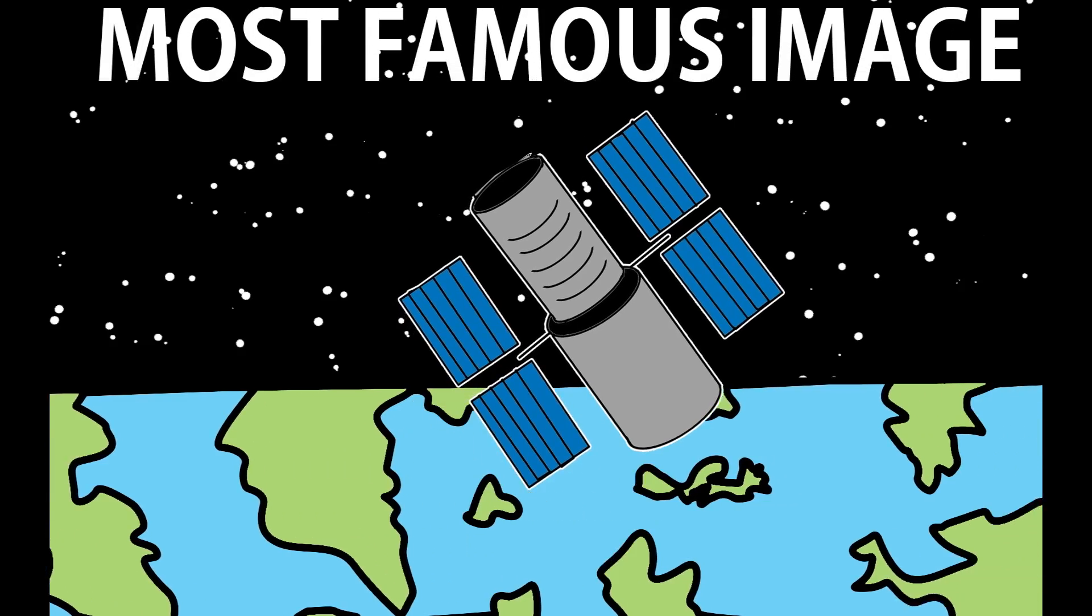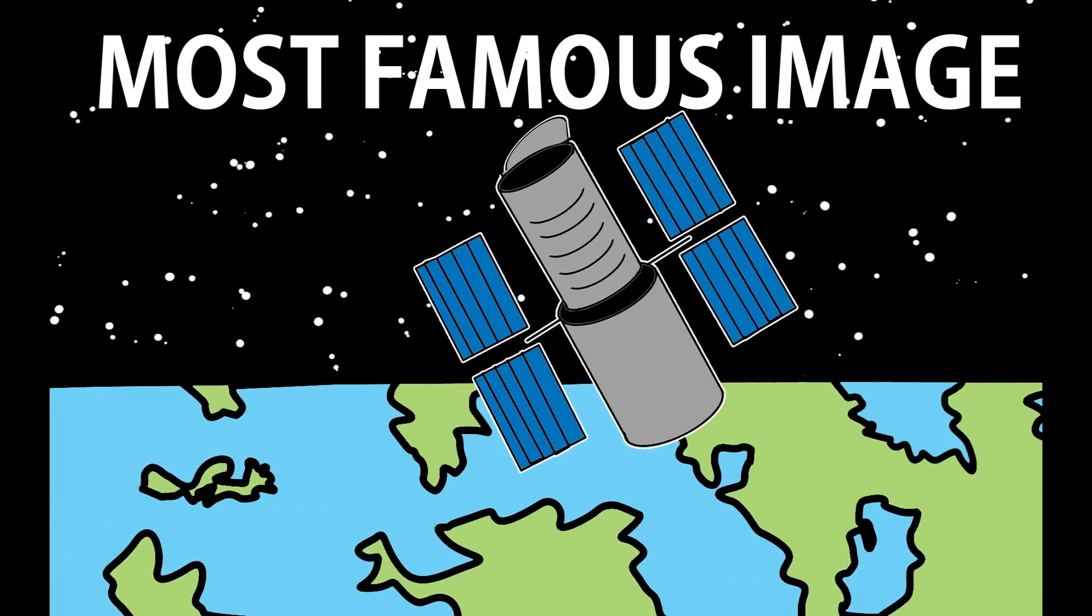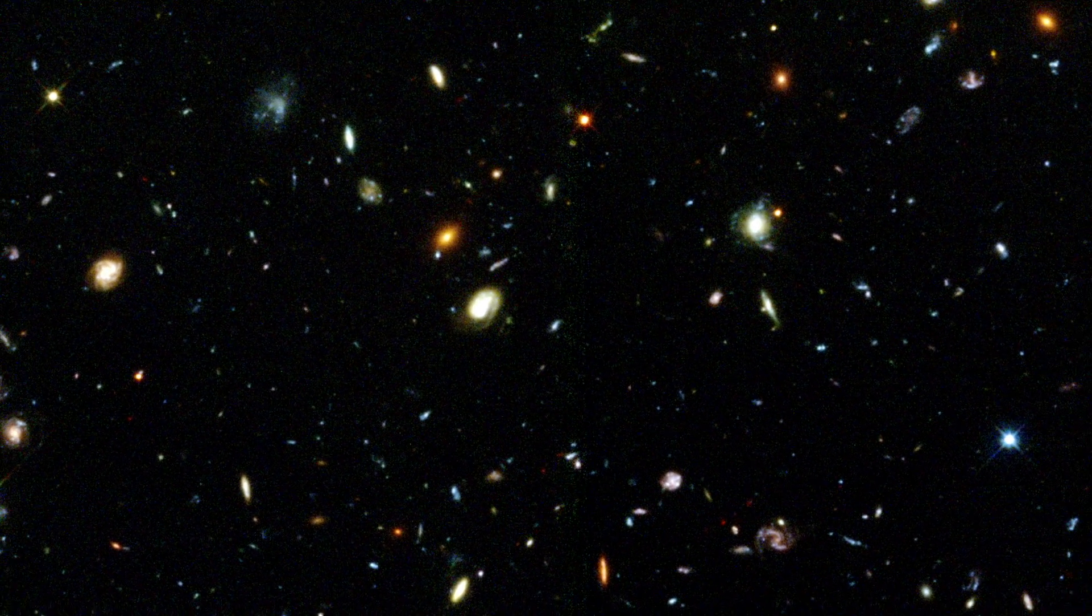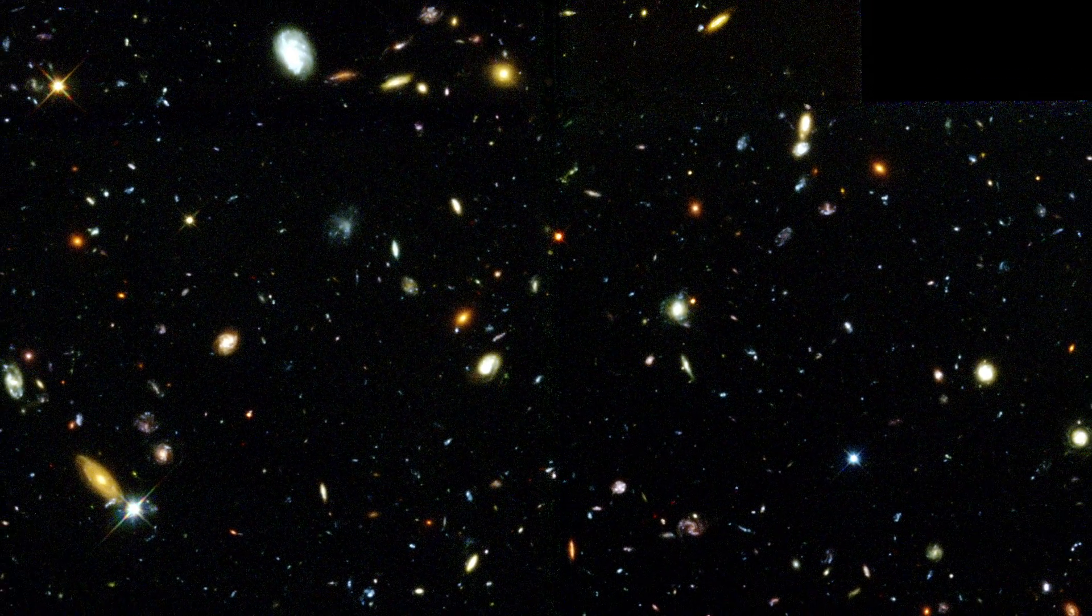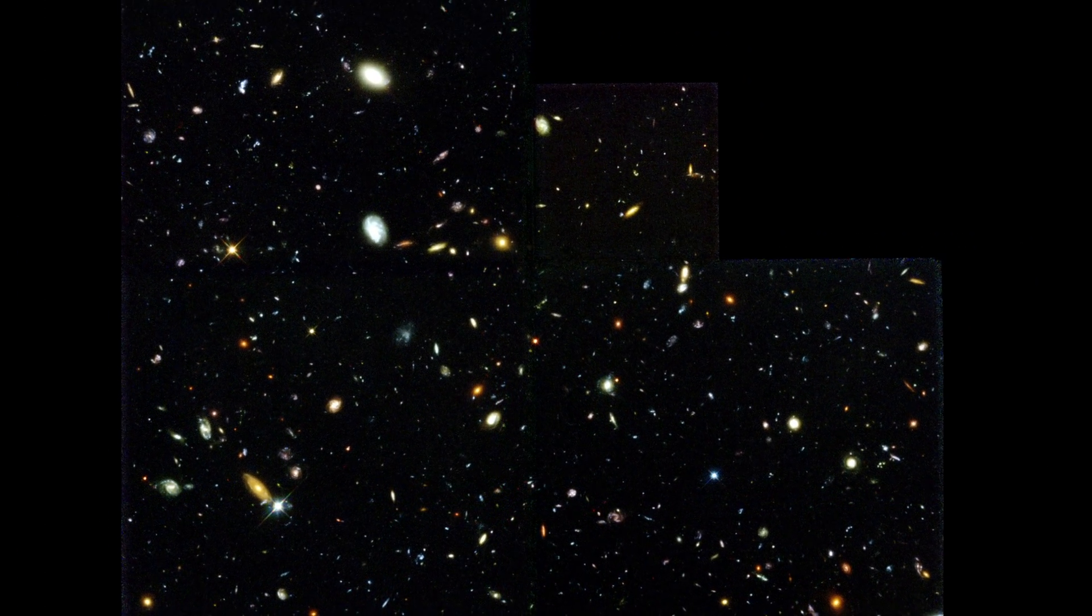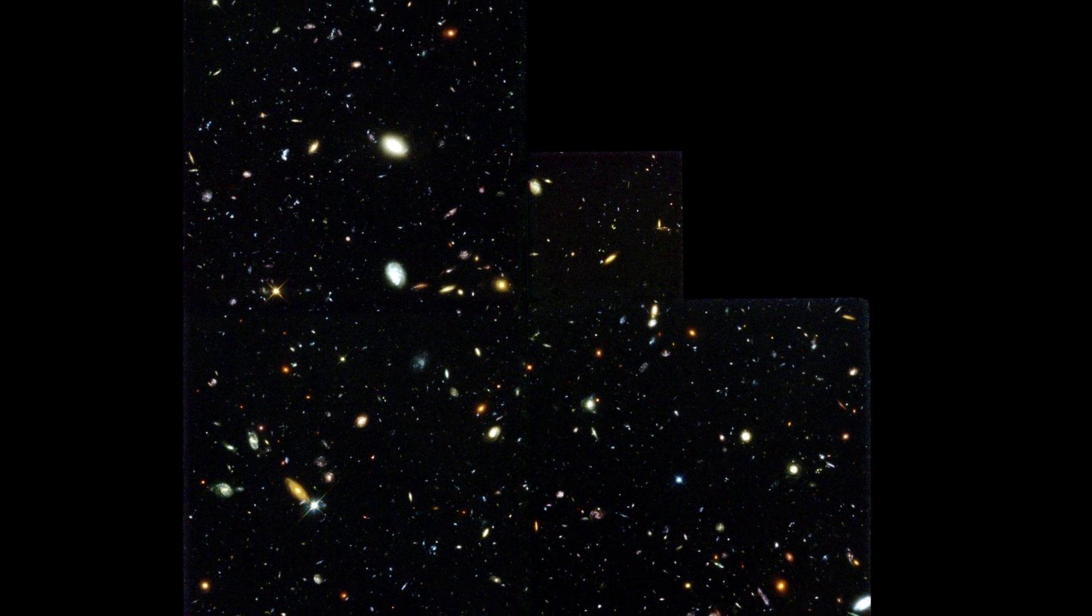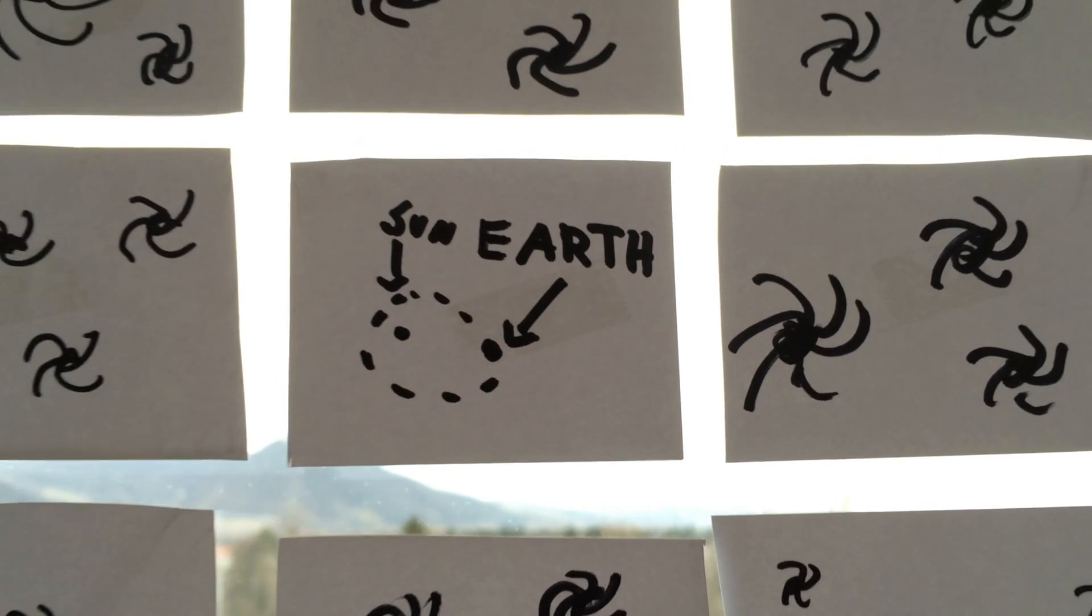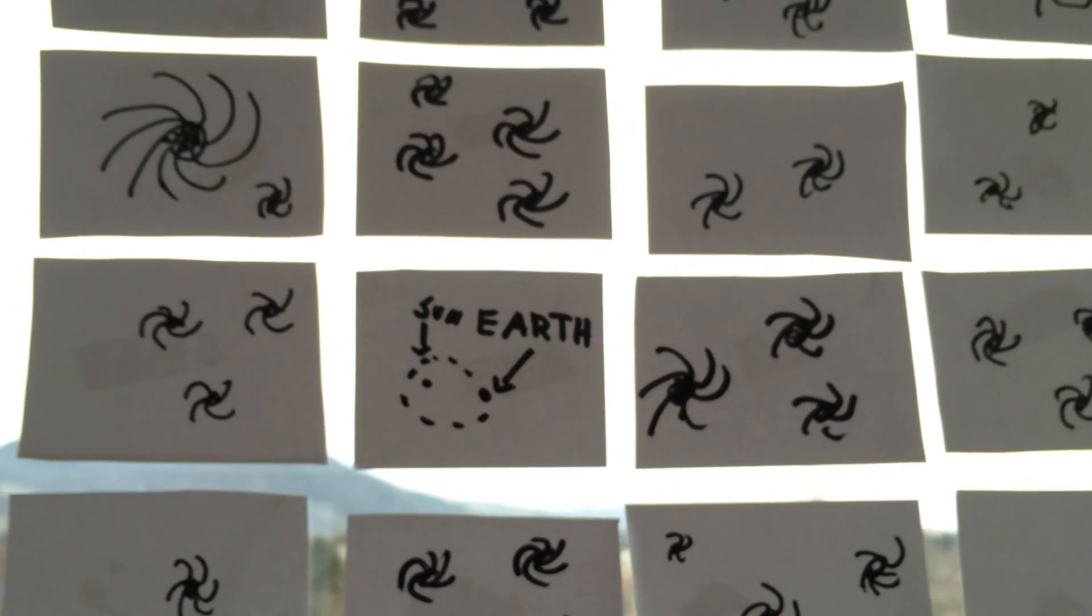One of Hubble's most famous images was created when astronomers pointed Hubble at a seemingly empty spot in the night sky. And after 10 whole days of observing, they were stunned by what they saw. The empty spot was in reality filled with almost 3,000 galaxies. This shows us how small we are in a big, big universe.